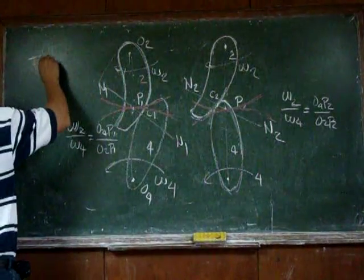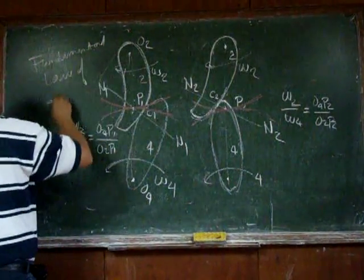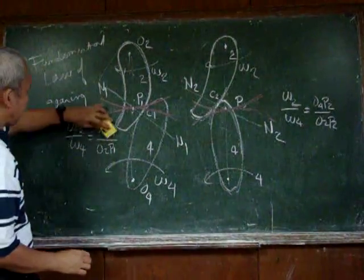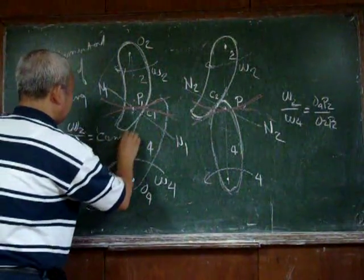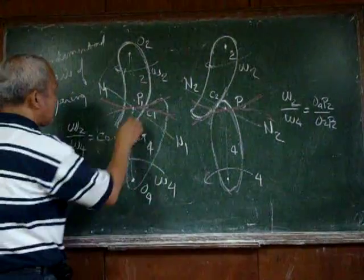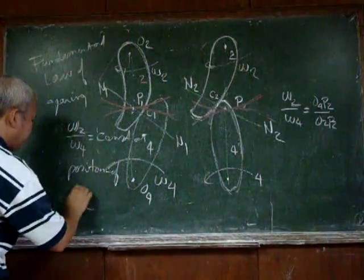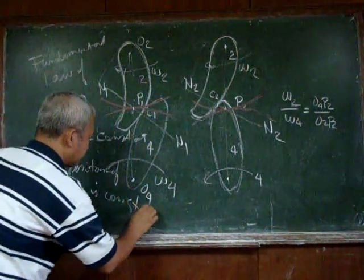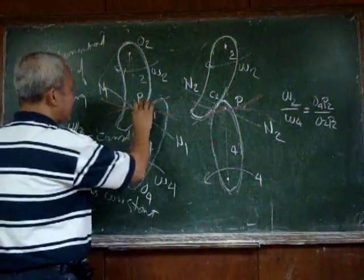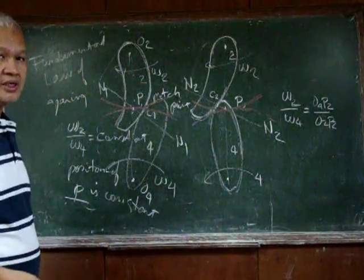Now, when we talk of the fundamental law of gearing, we just say that omega 2 over omega 4 has to be a constant value. And if it is a constant value, then the normal to the point of contact must always pass through point P. The position of P is constant. And that point P, by the way, is also referred to as the pitch point in the nomenclature of gears.